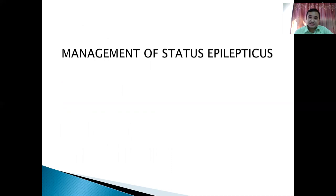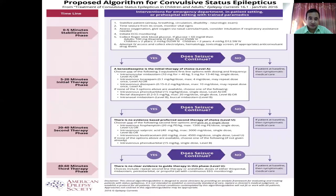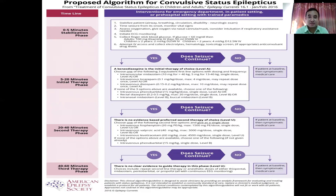The last major topic is status epilepticus, using the algorithm from the American Epilepsy Society. When someone presents in the emergency with seizure activity lasting more than five minutes, the first five minutes is the stabilization phase: establish airway, breathing, circulation; possibly intubate; suction if needed; give oxygen if hypoxic; immediately check blood sugar and give dextrose if hypoglycemic; open IV access and send samples for electrolytes, hematology, and toxicology screen.